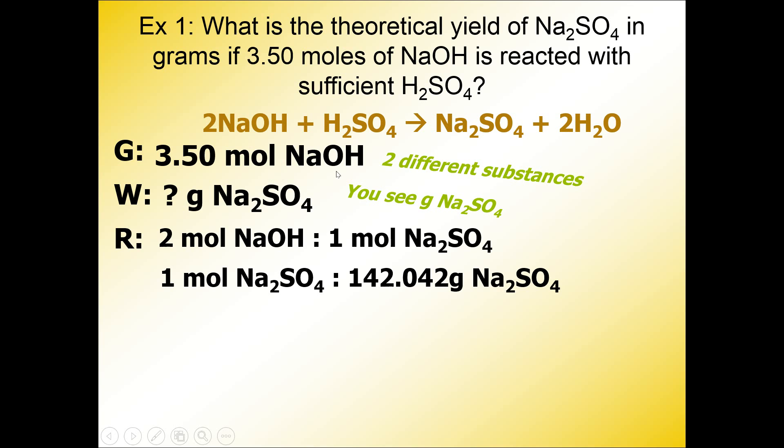And we can start the problem with our given over 1. Make sure our units of moles of NaOH cancel out with moles of NaOH. This ratio comes from this example right, or this ratio right here. We want our units to cancel out diagonally, so after the given, if it started with moles of NaOH, I took this moles of NaOH and I placed it in the bottom diagonal from the given.